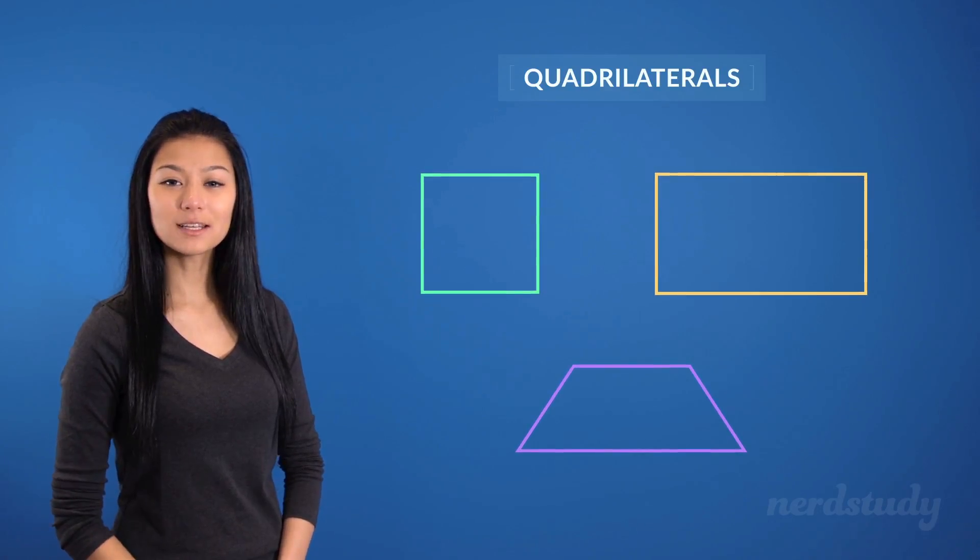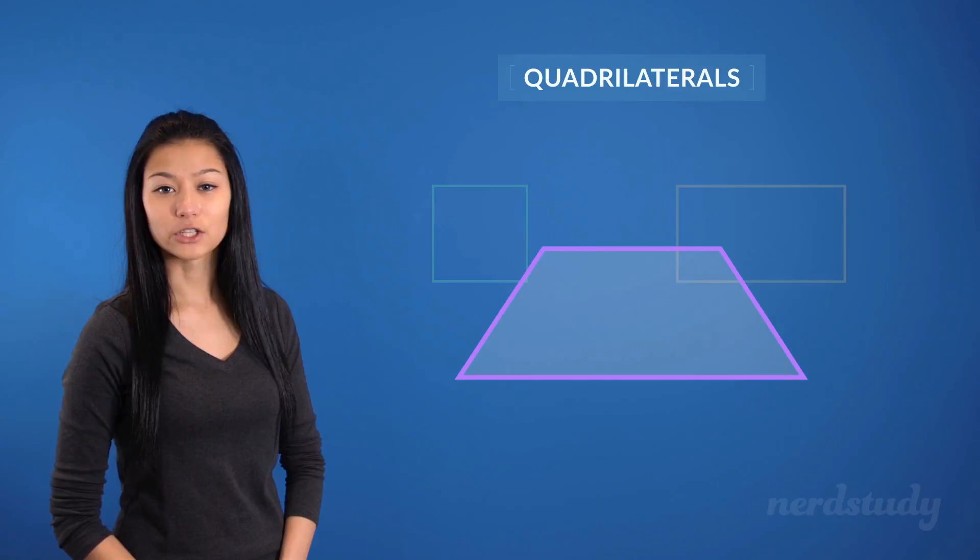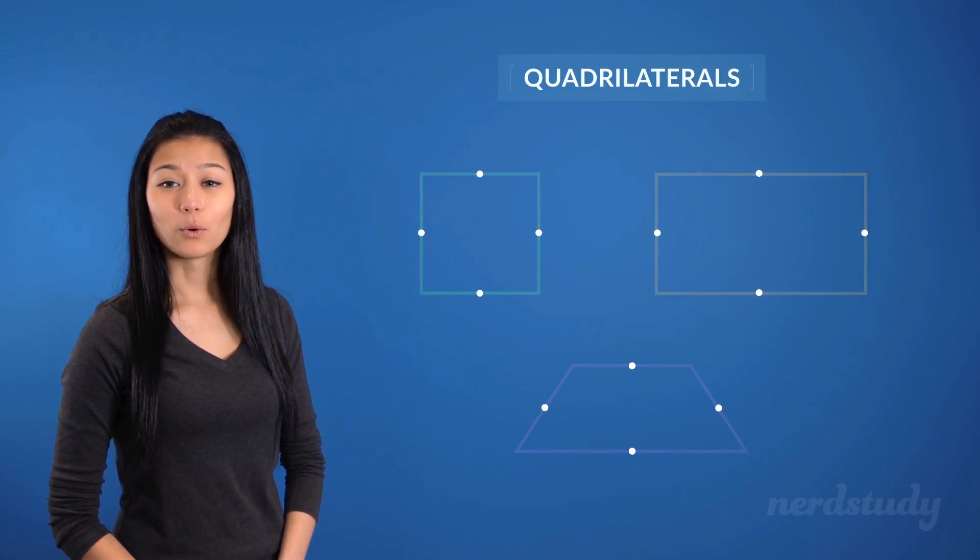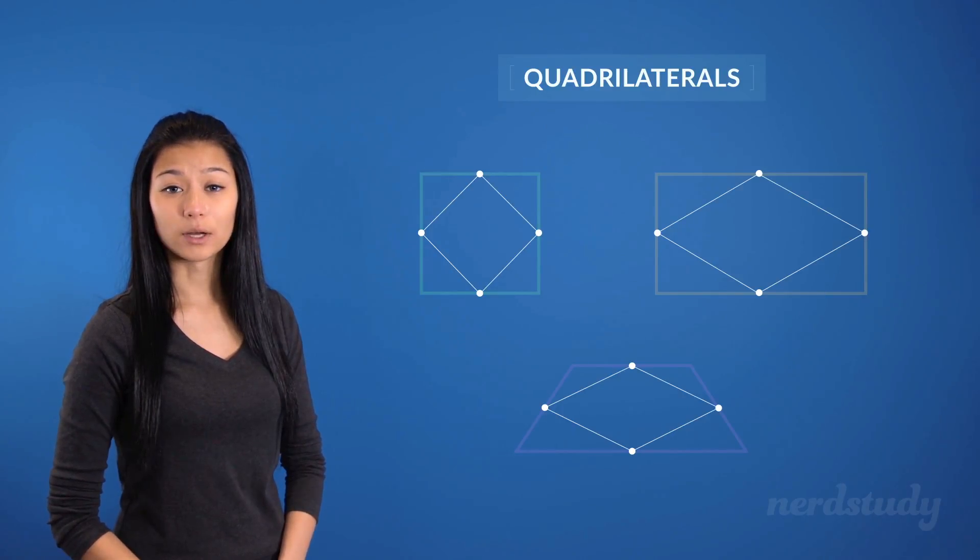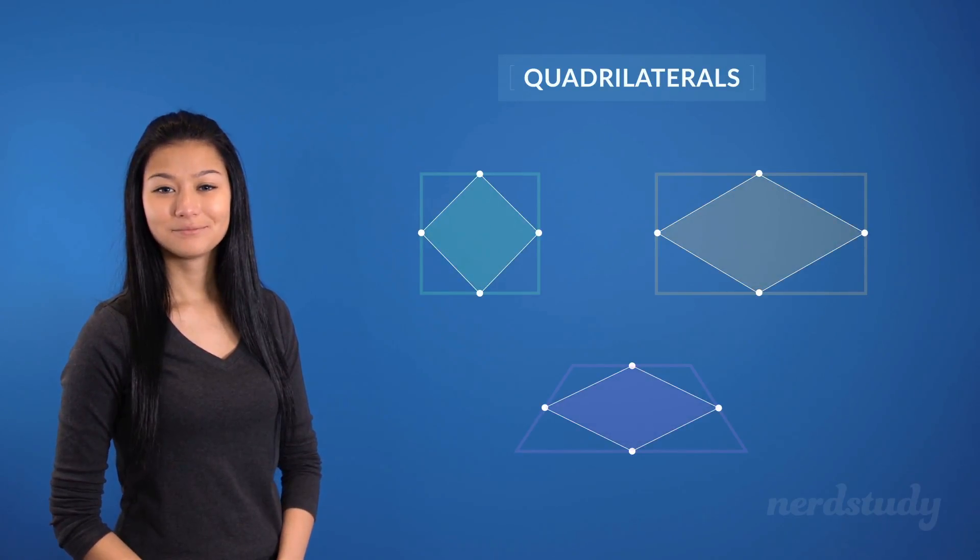Now, one interesting thing about all quadrilaterals, including the ones that don't look like a square or a rectangle, is that if we identify the midpoints of any quadrilateral and draw lines to connect all the midpoints, except the ones that are across from each other, then we will always end up with a parallelogram. Awesome!